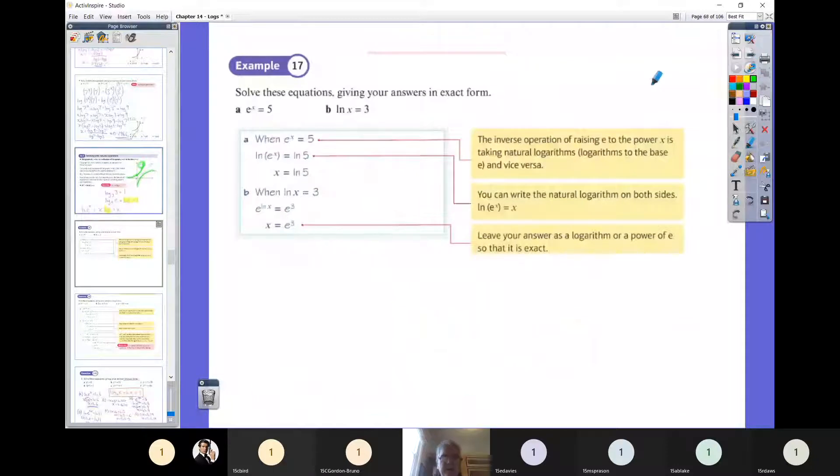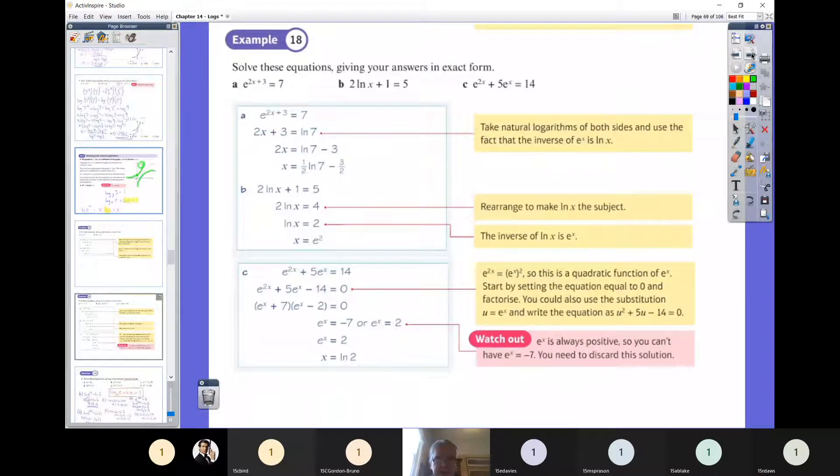OK, so it just takes you through some simple examples. OK, so ln e to the x is the sense of ln 5, x equals ln 5. So I think that's almost what we just covered. Example 18. OK, so just remember what we're just doing is the power rule. It's the power rule. And so we're taking the 2x plus 3 downstairs.